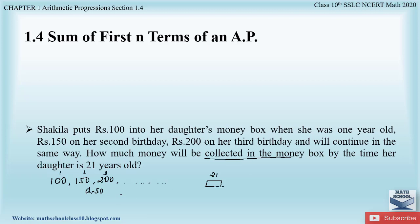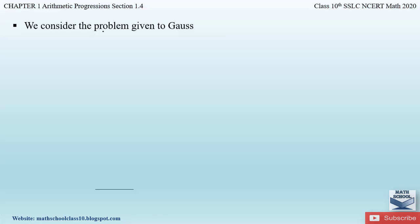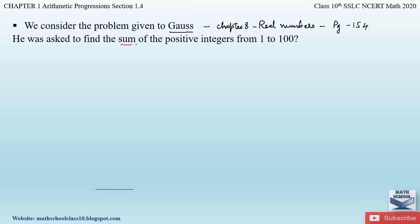Instead of adding all the terms individually, we can derive a formula to find the sum of the first n terms of an AP. Let us consider the approach given by Gauss to find the sum of the first n terms. Gauss was a great mathematician mentioned in Chapter 8: Real Numbers — I have already uploaded those videos, so find the link in the description or click the 'i' button above.